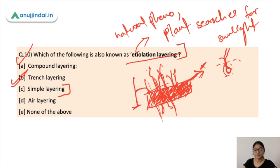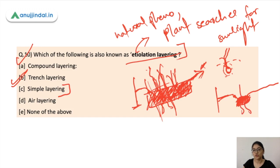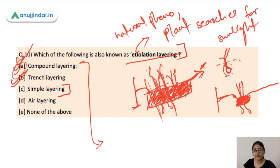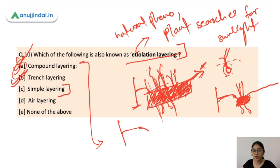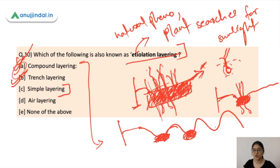In simple layering, you bend a small portion of the branch and cover just that section with soil, leaving the tip exposed. In trench layering, the whole branch is covered with soil. The new growth rises toward sunlight as it develops beneath the soil.